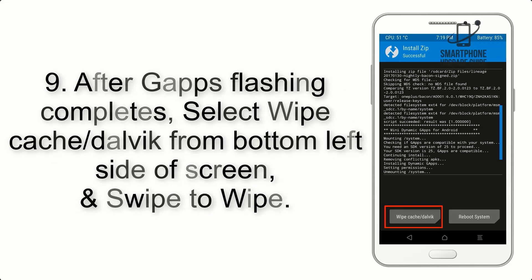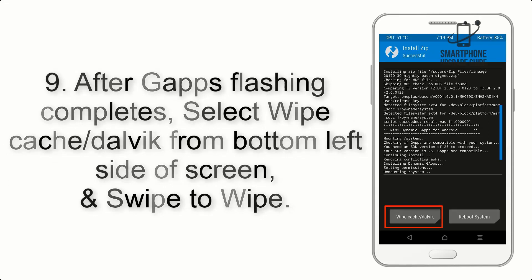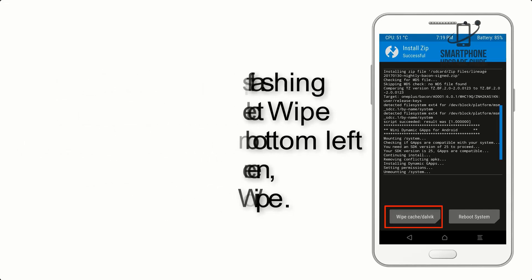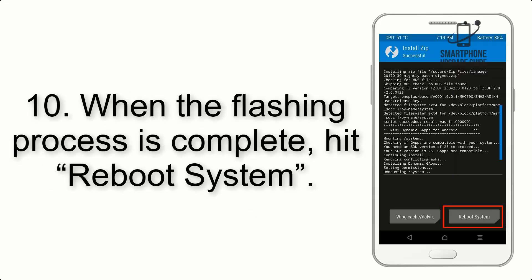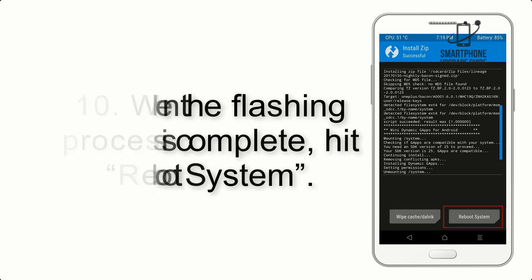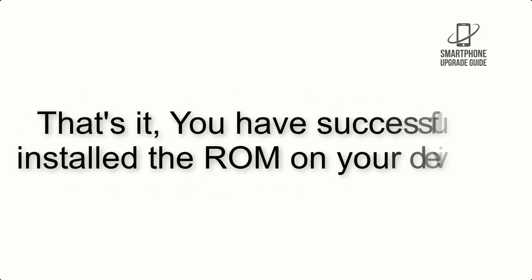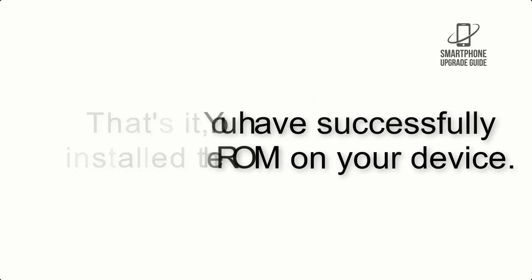Step 8: Flash the GApps zip package in the same manner. Step 9: After GApps flashing completes, select Wipe Cache and Dalvik from the bottom left side of the screen and swipe to wipe. Step 10: When the flashing process is complete, hit Reboot System. That's it — you have successfully installed the ROM on your device.